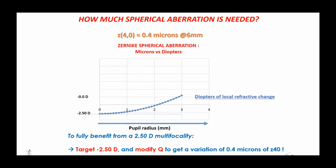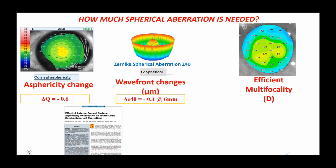Hence, on a non-dominant eye, to fully benefit from a 2.5 diopter addition with multifocality, the surgeon has to target a refraction of minus 2.5 postoperatively and alter the Q-value to get a variation of 0.4 microns of spherical aberration. The next challenge is to determine which asphericity change is necessary to change spherical aberration by minus 0.4 microns on a 6 mm pupil. We have published these results in the JRS: a change of about minus 0.6 for the Q-value toward increased prolateness would work for most positive hyperopic and presbyopic power corrections.